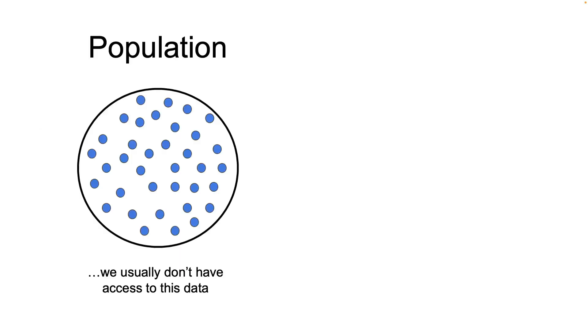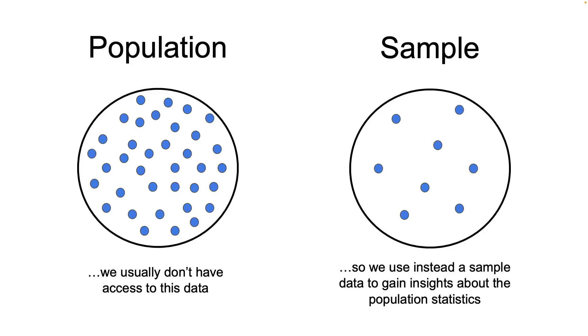First things first, we need to understand the difference between a sample and its corresponding population. In statistics, we are trying to measure and analyze some interesting facts about the population. Unfortunately, we usually don't have access to the whole data available of the given population, so what we do instead is to take a sample that we hope is significant enough to give us insights about the characteristics of the whole population.